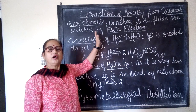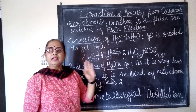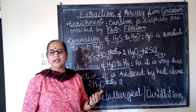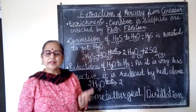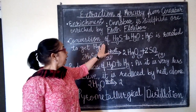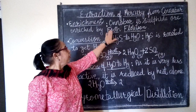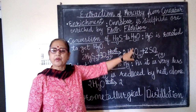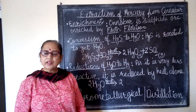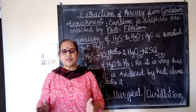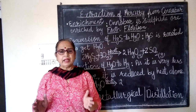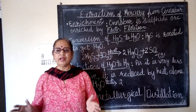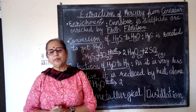Enrichment, also called ore dressing or ore concentration, is done to remove the gangue — that is, the earthly impurities — from the ore and to increase the percentage of ore. As it is a sulphide ore, it is enriched by the froth flotation process. In this process, the ore is mixed with water and a bit of pine oil, and this mixture called slurry is placed in large wooden vats, and then compressed air is passed.